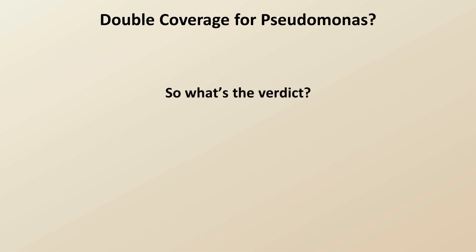So overall, what's the verdict? Should we empirically double cover for Pseudomonas? I think we don't actually know. Since I work at an academic institution where I am encouraged to provide some degree of autonomy to the medical residents, I usually go along with whatever they propose when it comes to this issue. However, if I were working alone, my general approach would be to double cover only for those patients who have been in the hospital for a week or longer, who are chronically ventilator dependent, who had previously been infected with a highly resistant strain of Pseudomonas, or who have cystic fibrosis. I'm not saying this is the correct approach per se, because I don't think we actually know — it's just what I would do in the absence of more definitive data.